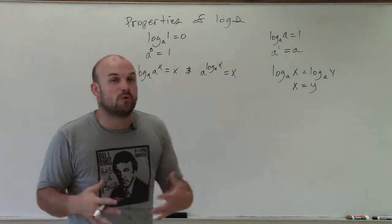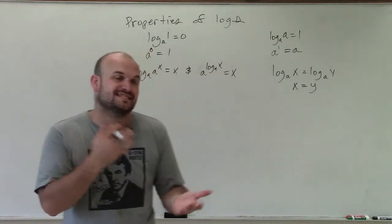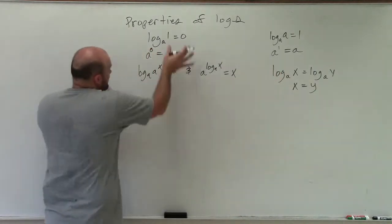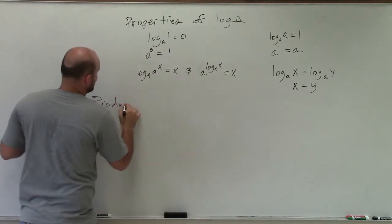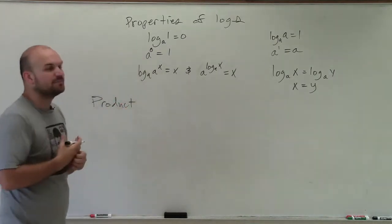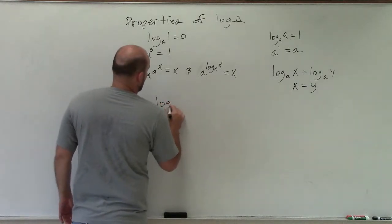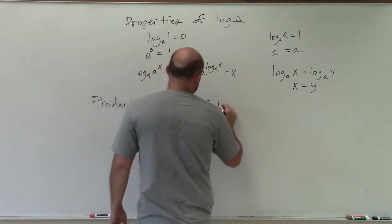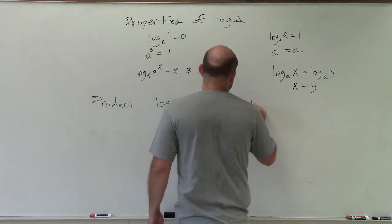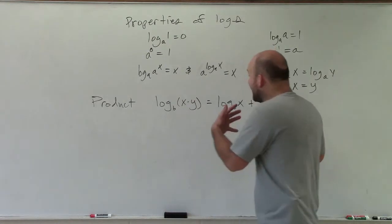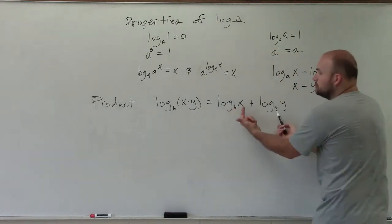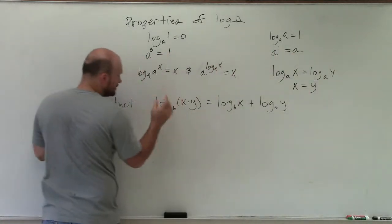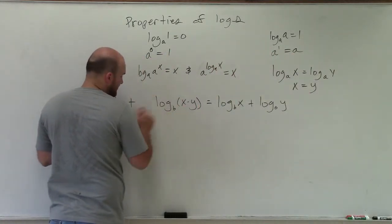The next three properties are very important for expanding, condensing, and solving. Anytime we have a product within a logarithm — log base b of x times y — we can rewrite that as log base b of x plus log base b of y. And it also works the other way: if we have two logarithms with base b being added, we can rewrite them as one single logarithm, base b, of the product x times y.